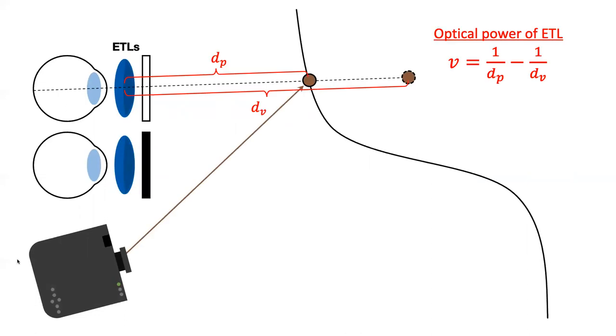From a thin-lens equation, we compute the optical power of the ETL by which the virtual image of the projected result locates at the desired depth. And this determines the timing when the image should be projected in a focal sweep period.